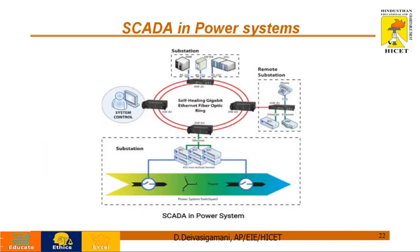This is a scheme of SCADA application in power systems. In power system applications, SCADA covers entire areas like power generation, utilization, and transmission. Each and every substation is connected via remote substations to the SCADA master terminal unit, where all decisions are taken. Everything is connected via smart grids using advanced protocols.